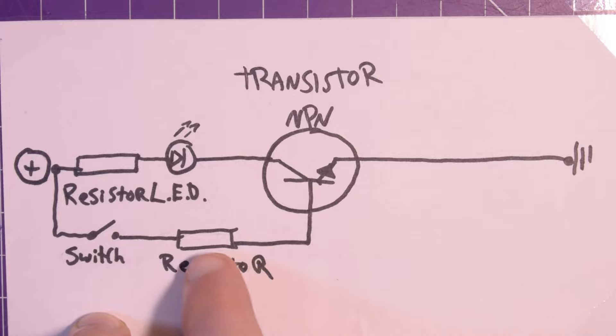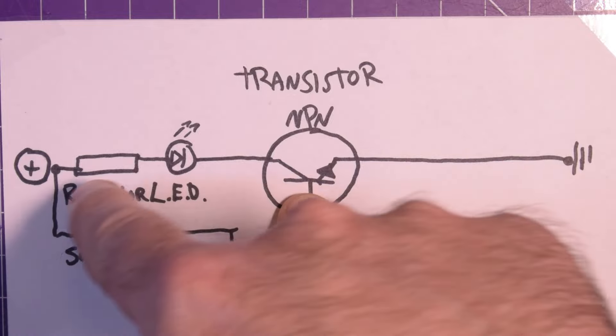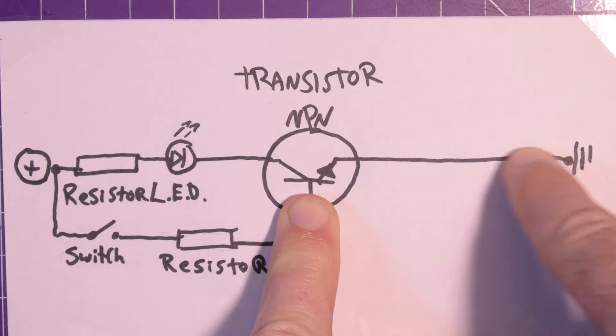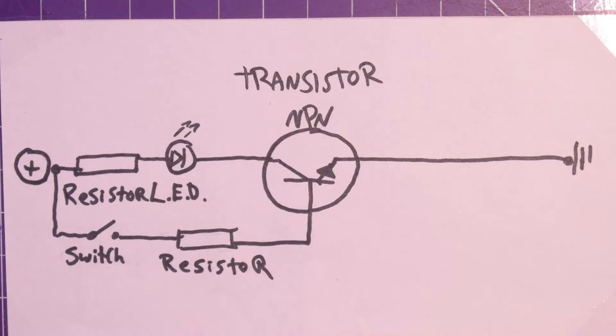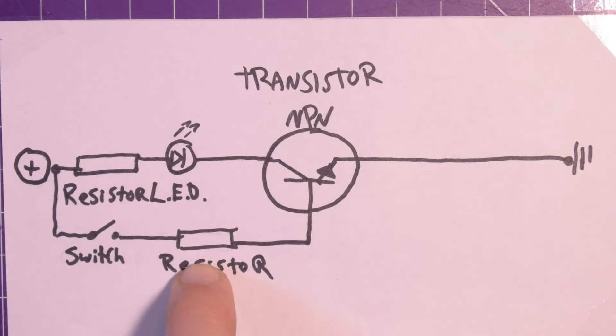And when current flows from the base to ground, current is allowed to flow through the transistor this way. And so what we have here is a switch to turn on and off the transistor, and we have a resistor to make sure we're not short-circuiting this section of the circuit.